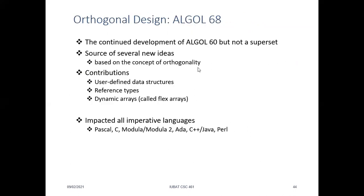The last topic is Algol 68. We have already talked about the Algol programming language. The development of Algol 68 is a continued development of Algol from 60, but it is not a superset. It is a source of different new ideas such as orthogonality. It contributed data structures, reference types, and dynamic arrays. Algol 68 has impacted all imperative programming languages such as Pascal, C, C++, Java, and so on.